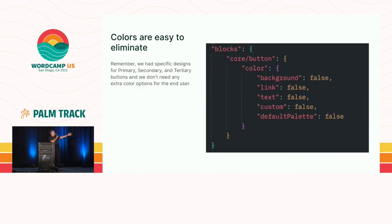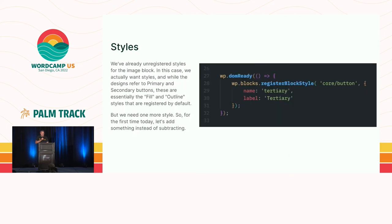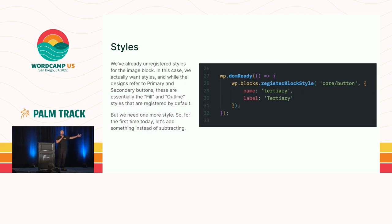So what do we do? First, those colors are easy to eliminate — on the core button block, we set false on a number of those attributes, and we're in good shape. That's the easy part. We had fill and outline styles by default, which basically match the primary and tertiary buttons from the design system. We could leave those as-is, or if we want exact naming, we can unregister those two styles and then register our own block styles — so now, in addition, we've got our tertiary style available in that same spot.